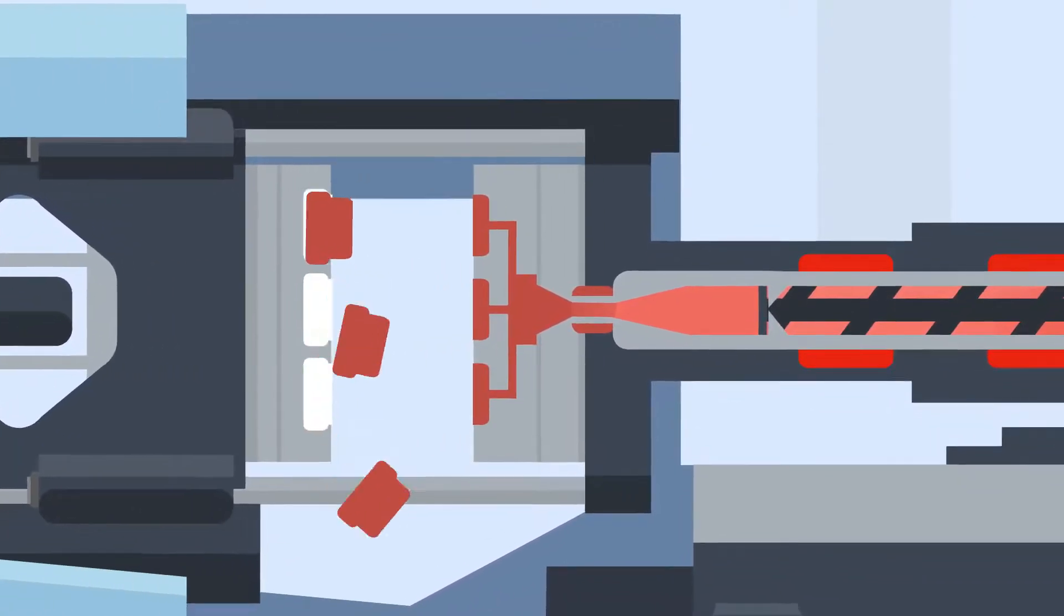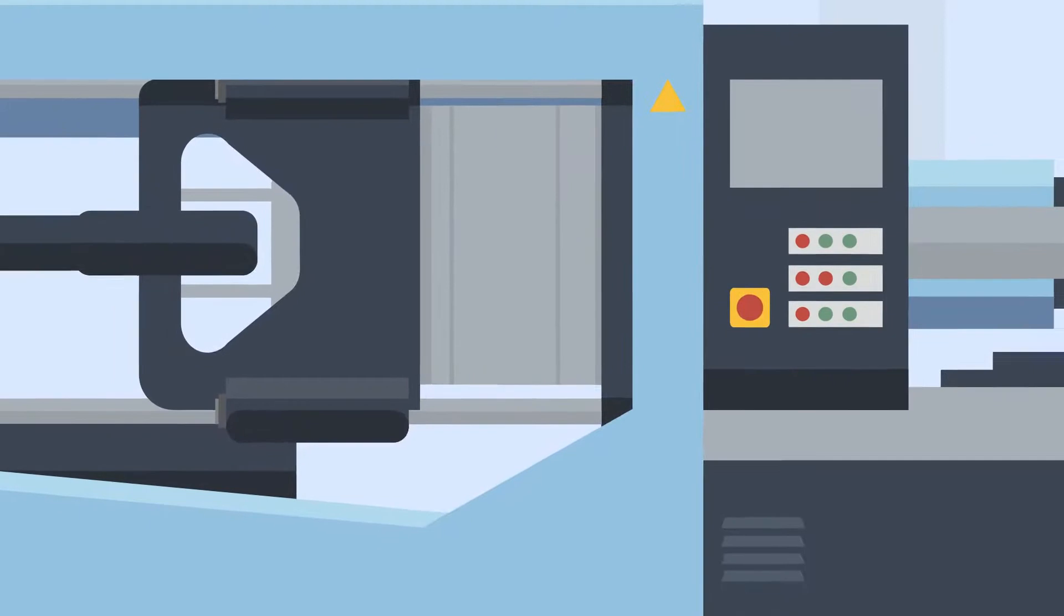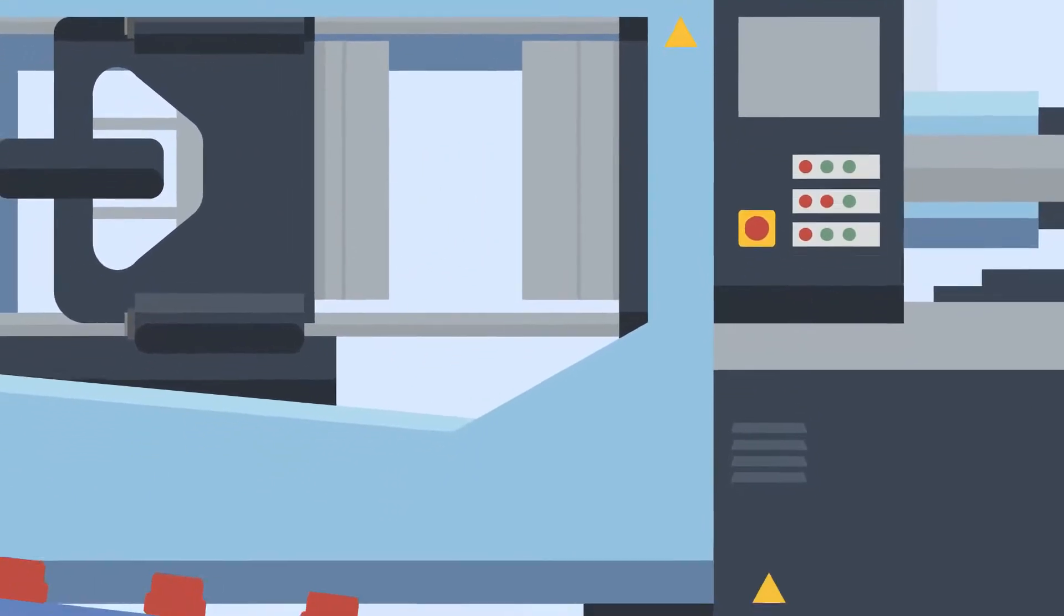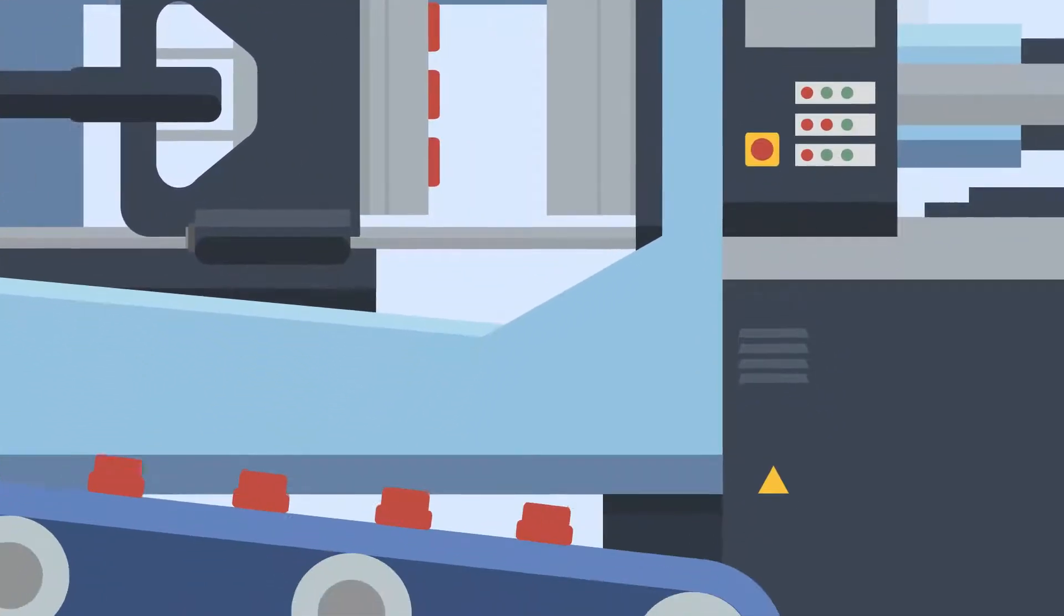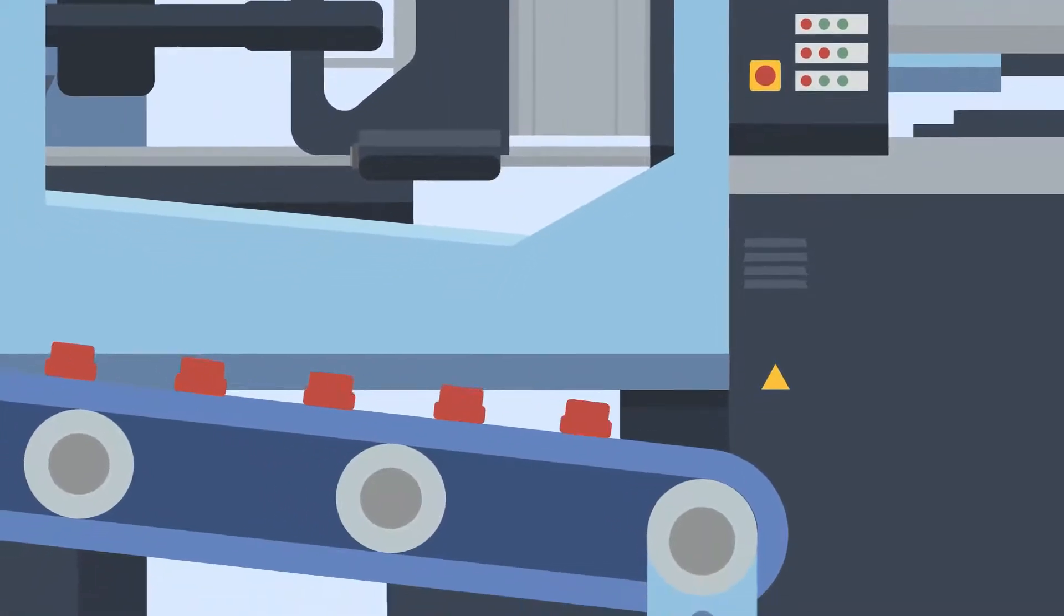Once the set cooling time has passed, the mold opens and ejector pins or plates push the new parts out of the tool. These then fall onto a conveyor belt ready to be finished and packed.